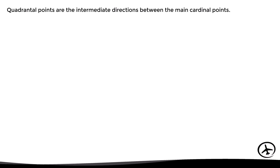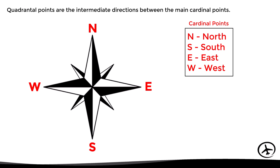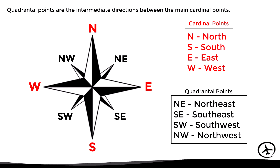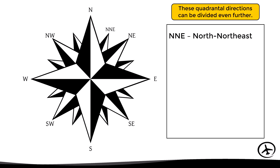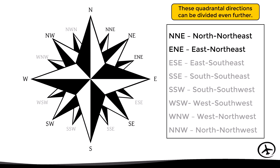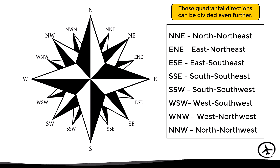Apart from these, there are other points known as quadrantal points, which are the intermediate directions between the four main cardinal points. These quadrantal points are northeast, southeast, southwest, and northwest. At the same time, these quadrantal directions can be divided even further — for example, between north and northeast we find north-northeast, and between northeast and east we find east-northeast, and so on.